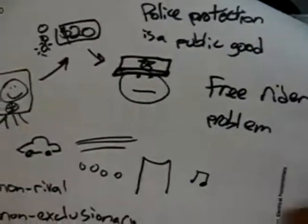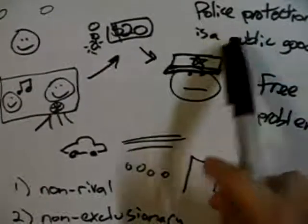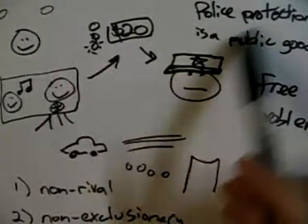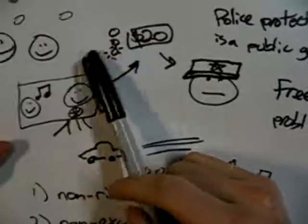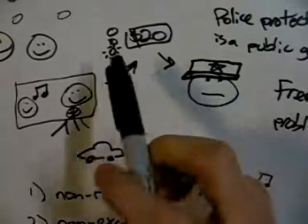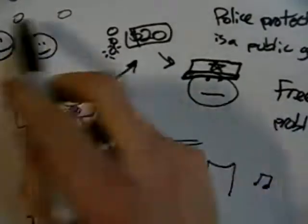So, how do we address the free rider problem? Like we were saying, police protection is funded by taxes, right? And taxes is not something that's optional. So that's one way of enforcing that people pay.